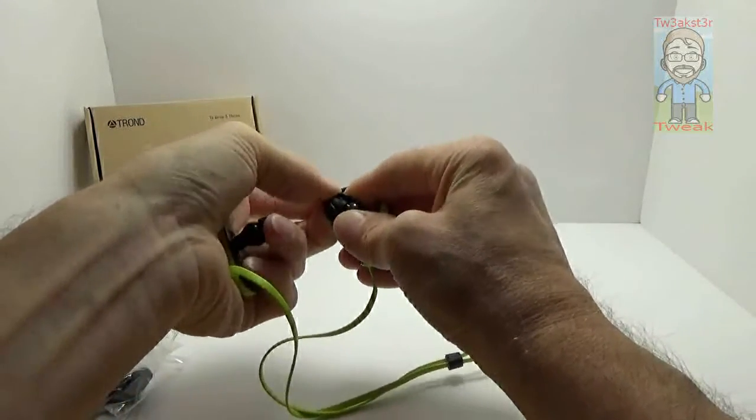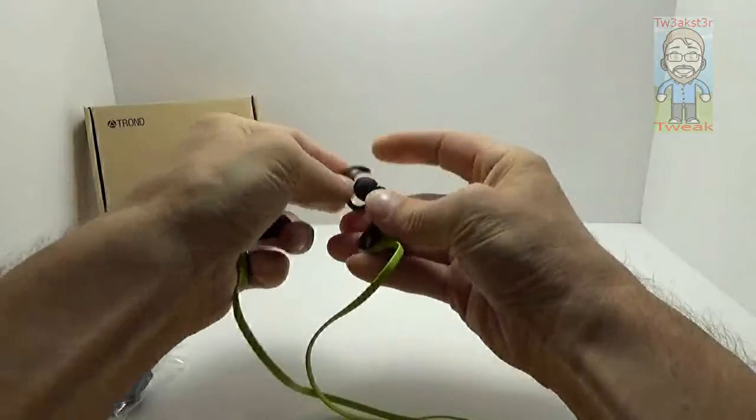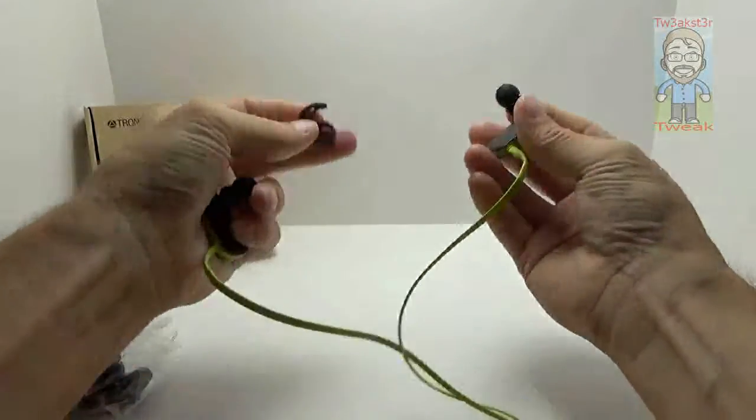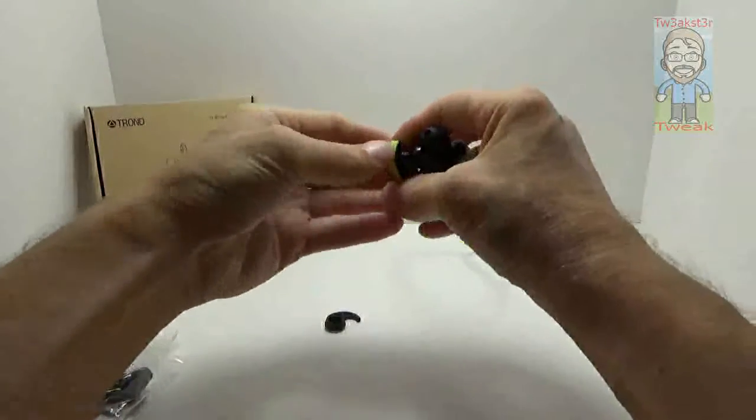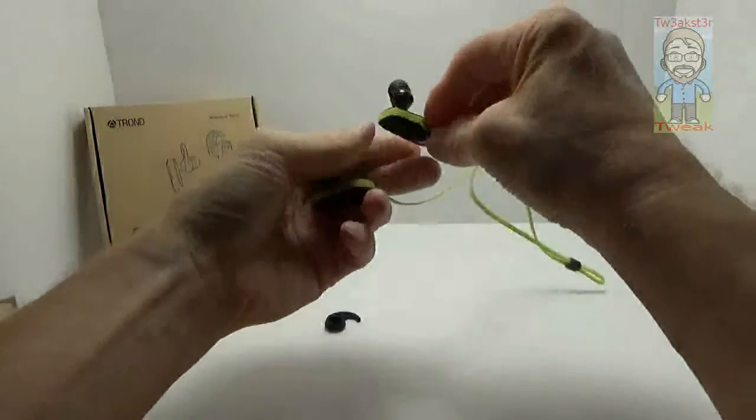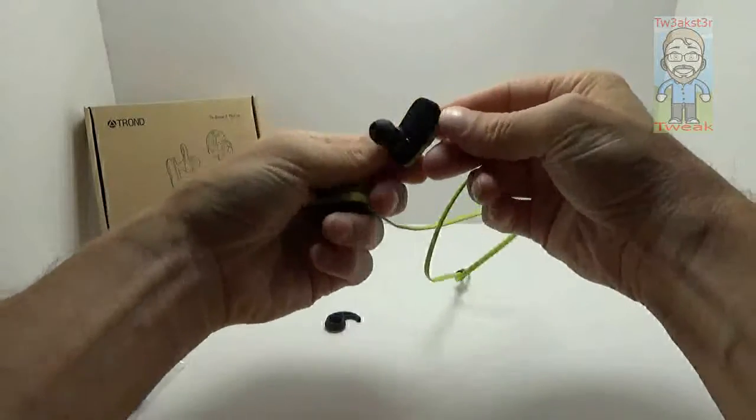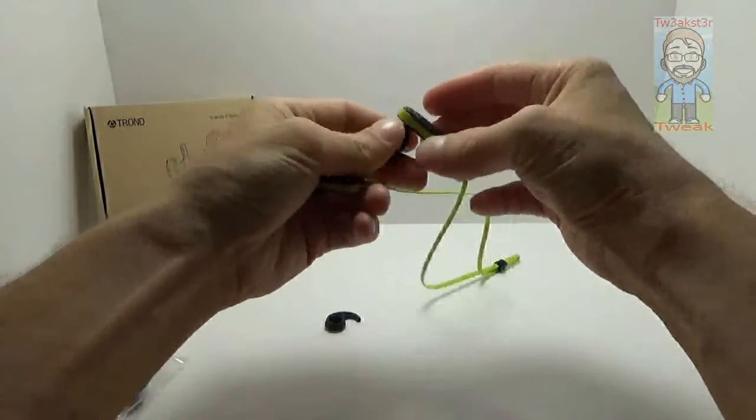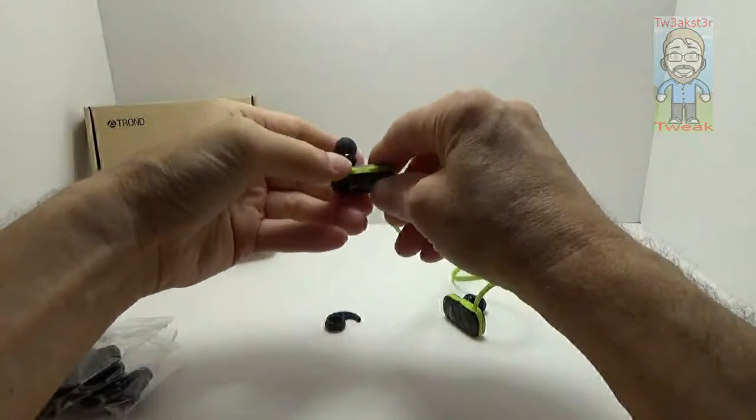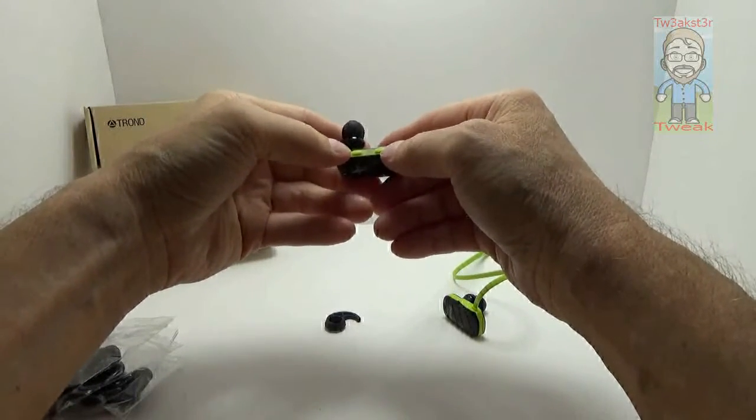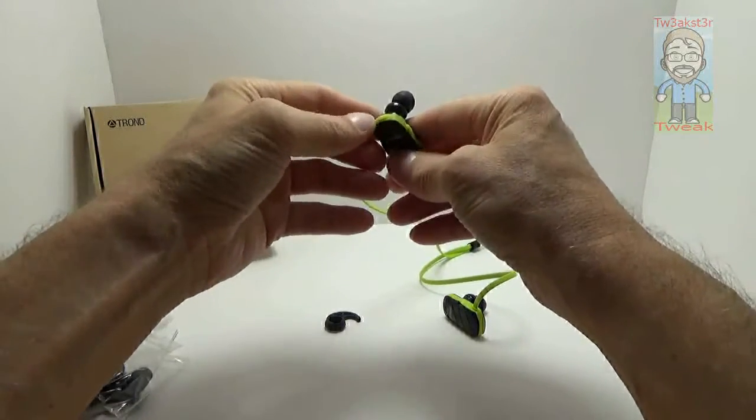As far as the actual buds, you have one side that has nothing on it whatsoever, so you don't have to worry about that. The other side has your track forward and track back, your volume up and volume down, and your multi-function button for answering or rejecting calls, pairing, things of that nature.